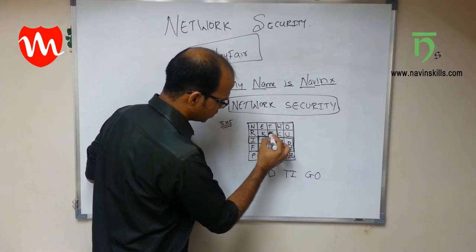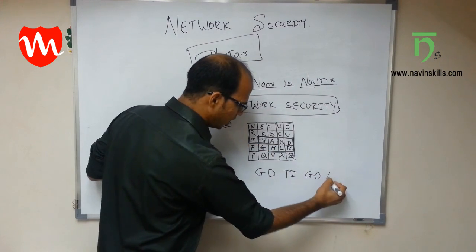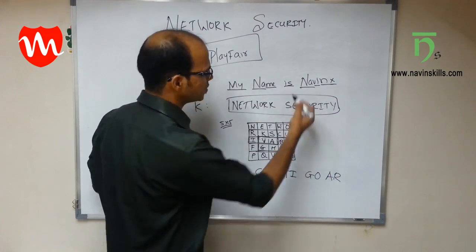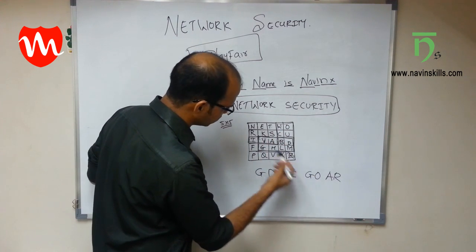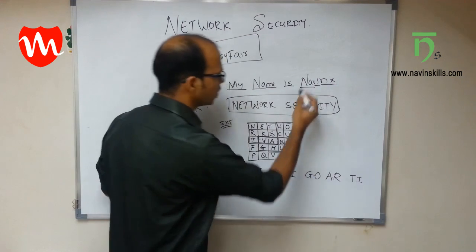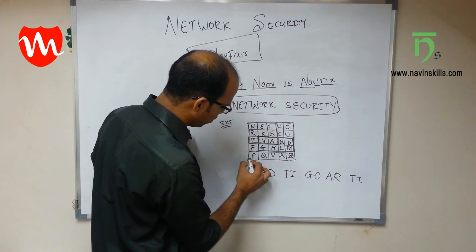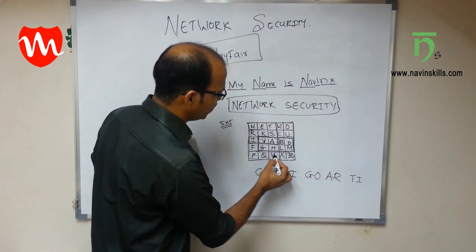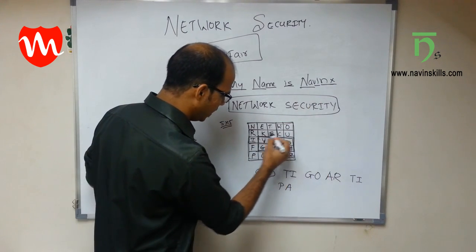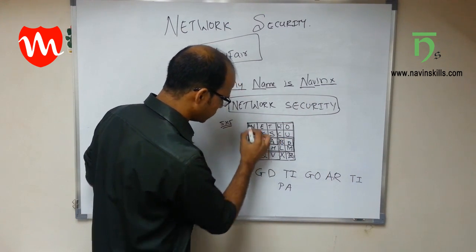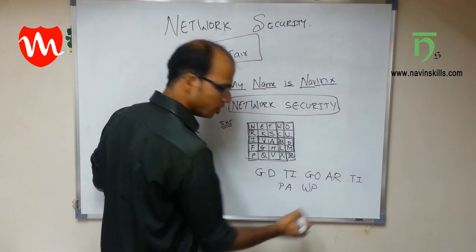For I and S: I is here, S is here — create a virtual box. For I you get A and for S you get R. For N and A again: you get T and I, so the combination is T-I. For V and I: V is here, I is here — form a box. For V you get P and for I you get A. For N and X: N is here, X is here — form a box. For N you get W and for X you get P.